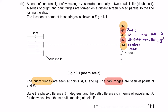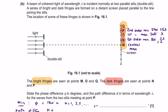P is the second order minimum, giving 540 degrees phase difference and 1.5 lambda path difference. For a minimum, the phase difference is 180 degrees times N where N is 1, 3, 5 — odd multiples — and the path difference is N plus half lambda. So for P: 540 degrees and 1.5 lambda. It's worth remembering these points.